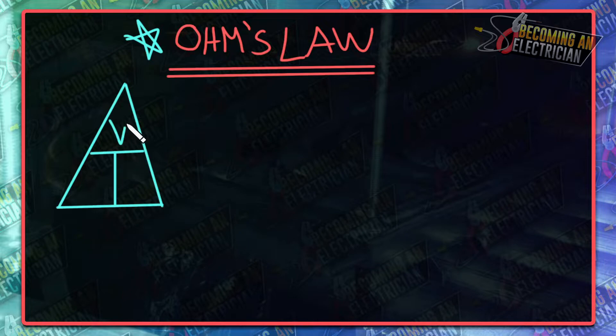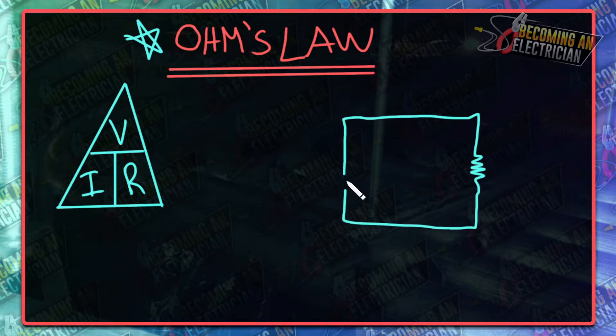Let me just draw a little circuit here. Whenever we have our circuit, we have a power source. You always want to draw your T's. These T's are just this triangle: voltage, current, and resistance.